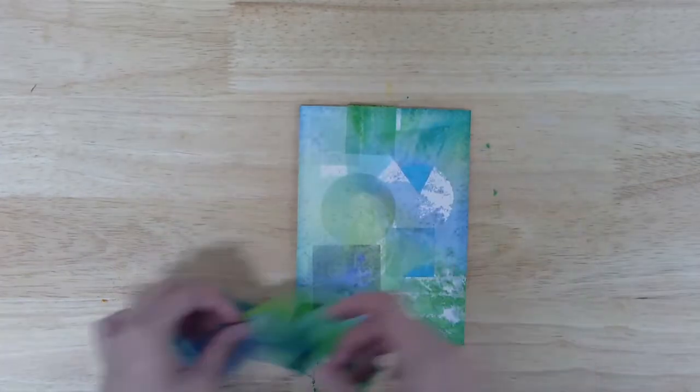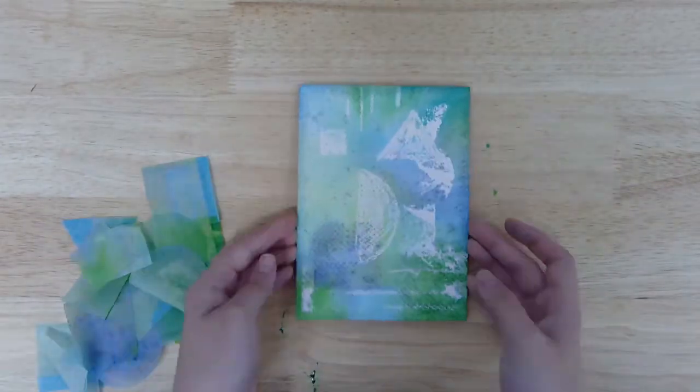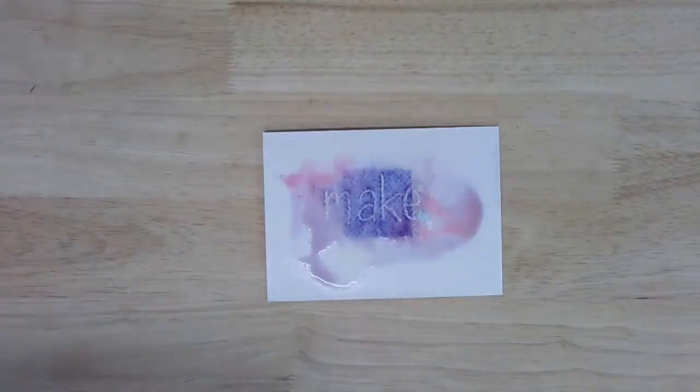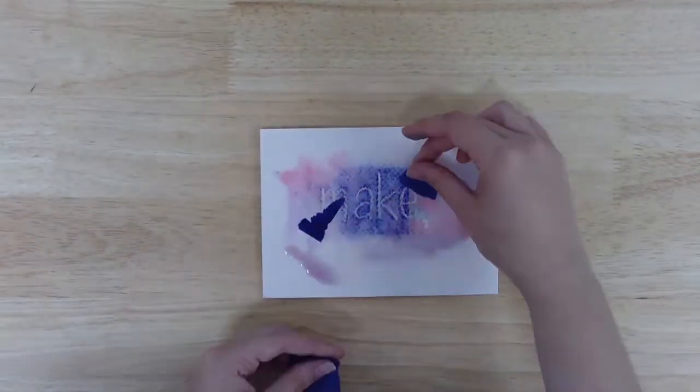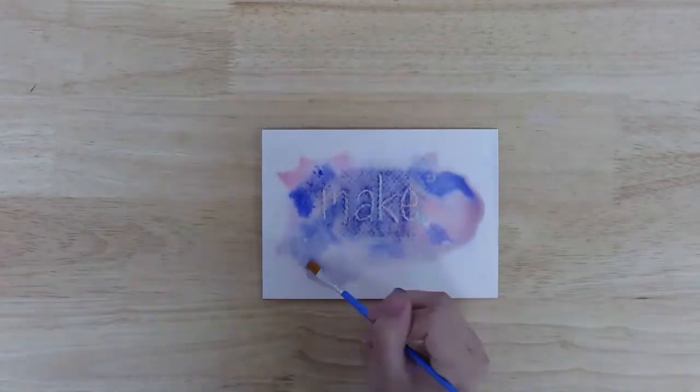When your canvas is mostly or fully dry, carefully remove the watercolor tissue one piece at a time to reveal your painting. If you'd like to add more color to your painting, just add a little more water and repeat the process from step three once again.